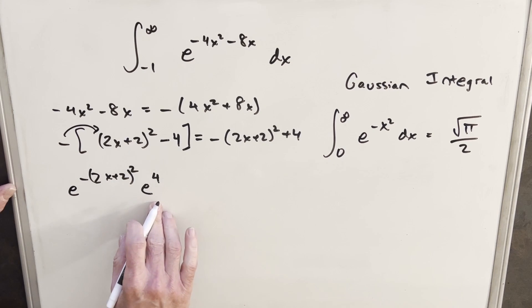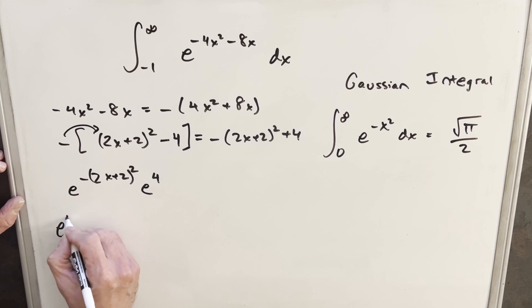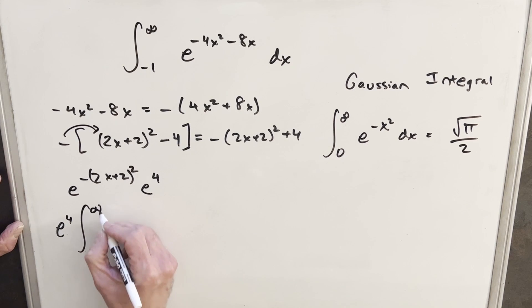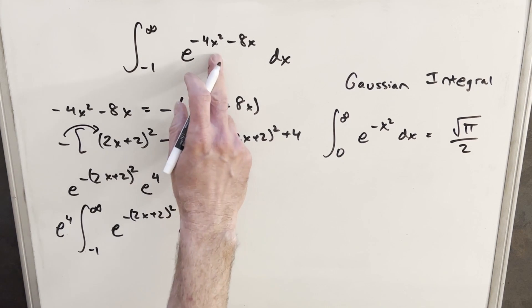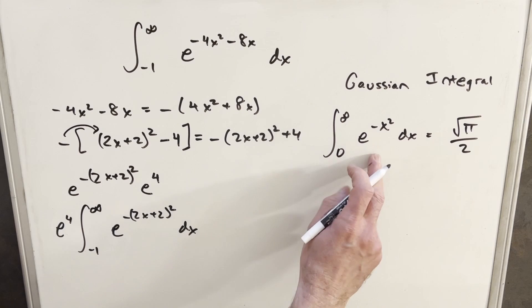Now, going back to the integral, what I can do is this e to the 4th is just a number. It's a constant value, so I'm going to bring this up front of the integral. Then we get our bounds, minus 1 to infinity, and now we're going to have this part, e to the minus 2x plus 2 squared dx. And see, the key here is now we just have one term squared, whereas we had two terms before, and we're getting closer to this.